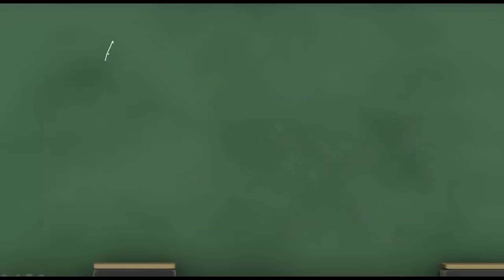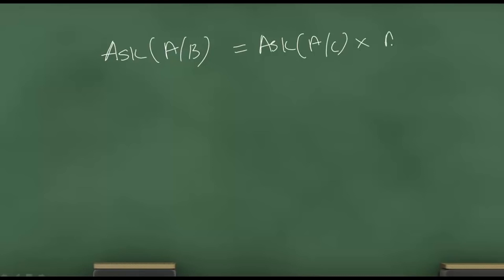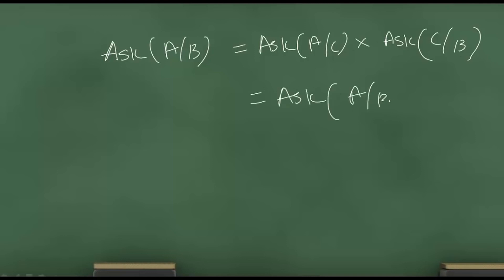Similarly, if you want to find the ask rate — ask A/B — it is going to be ask A/C multiplied by ask C/B. C and C cancel, and you will get ask A/B.